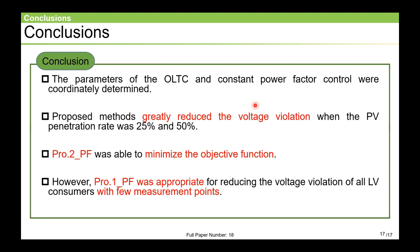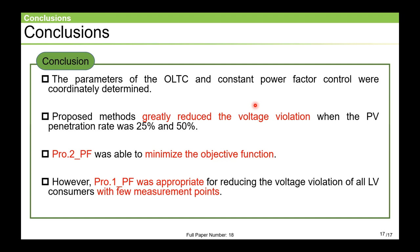Okay, let me finish with the conclusions. In this study, we proposed a method to cooperatively optimize OLTC and PV inverter parameters. The simulation results show that the proposed method can significantly reduce the voltage violation amounts, especially when the PV rate is 25% and 50%. In addition, in this study, PRO2_PF was able to minimize the objective function. However, when it was desired to reduce the voltage violation at all LV consumers with few measurement points, PRO1_PF was the most suitable. Thank you for listening. If you have any questions, I will be glad to answer them.